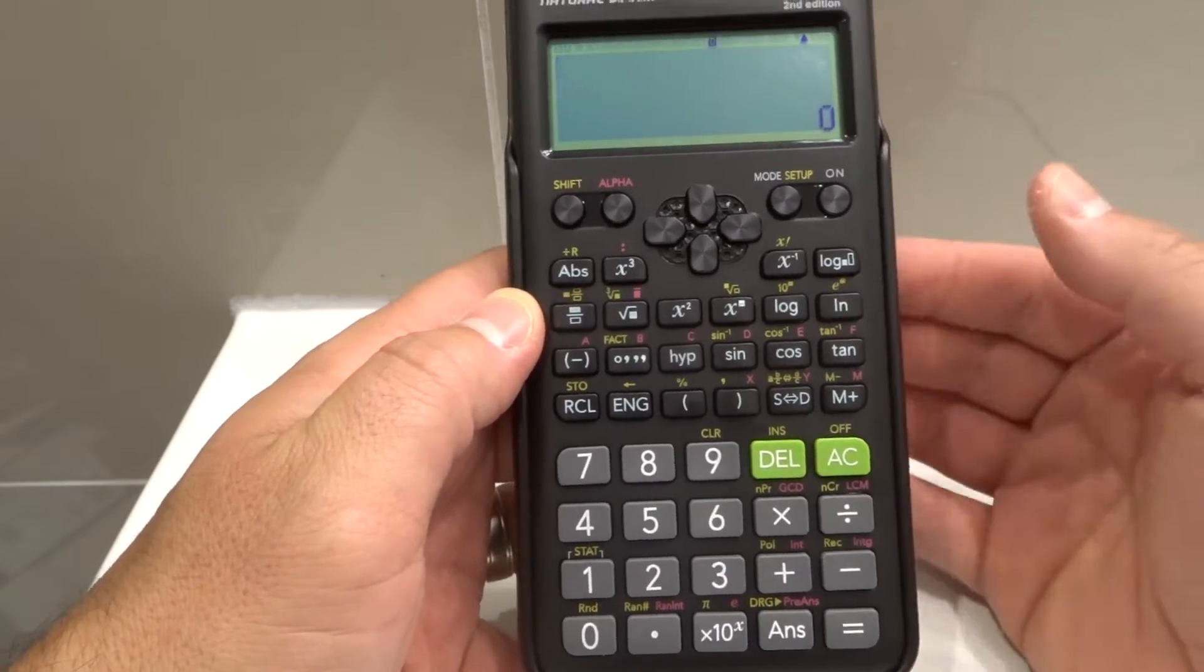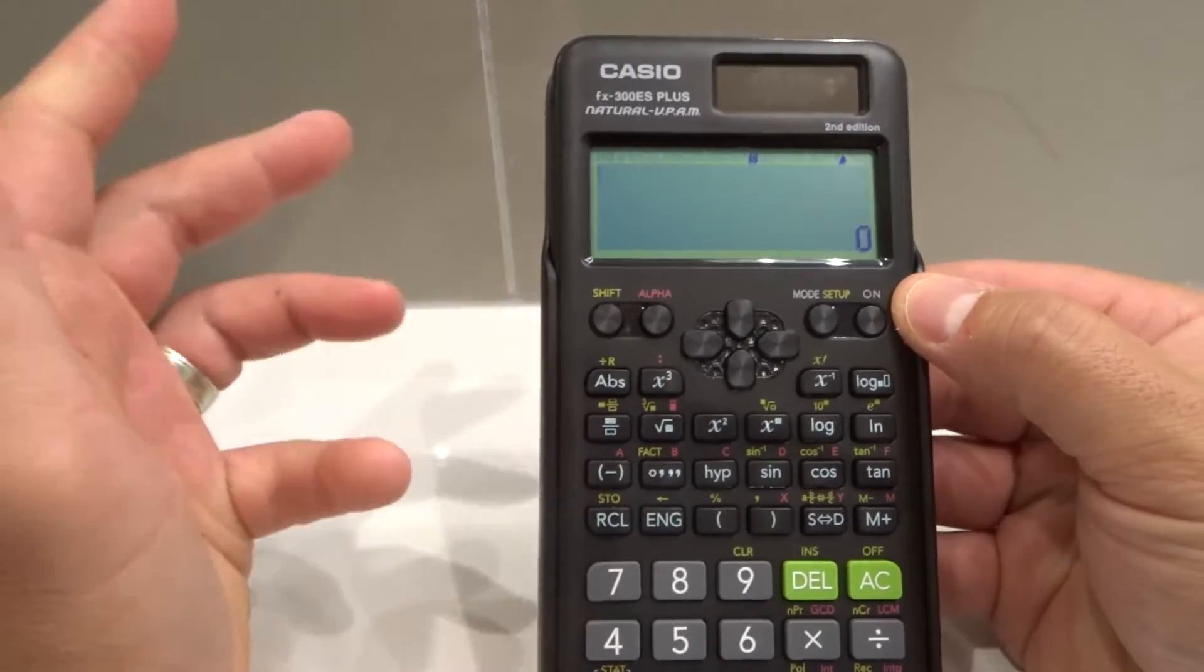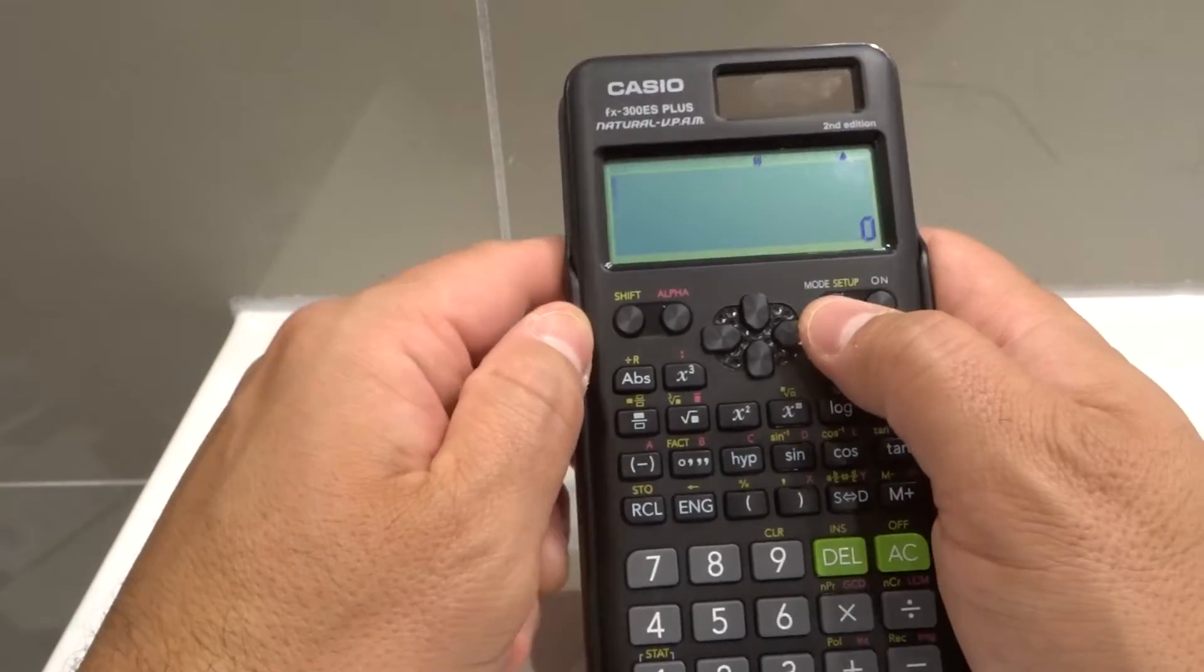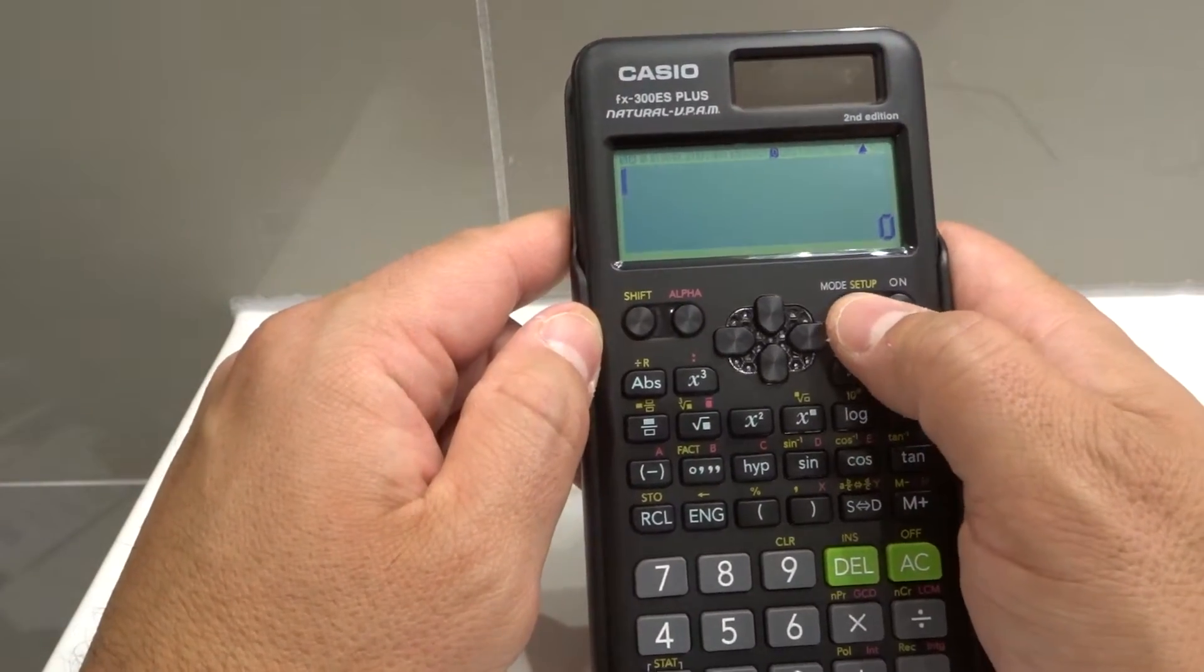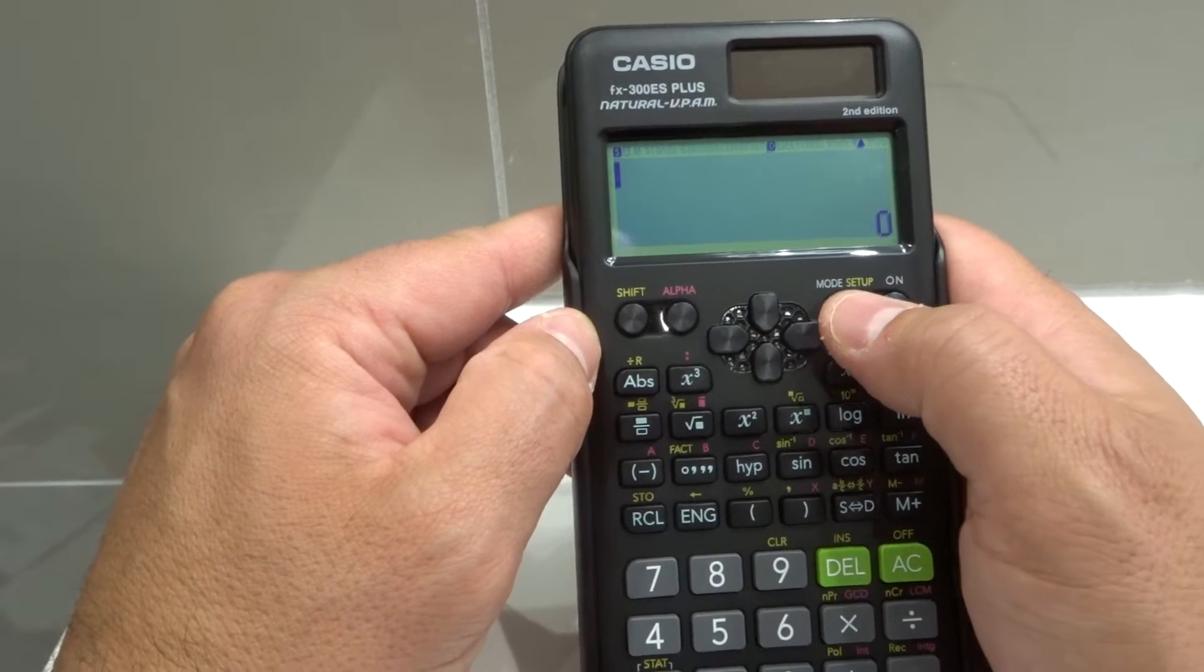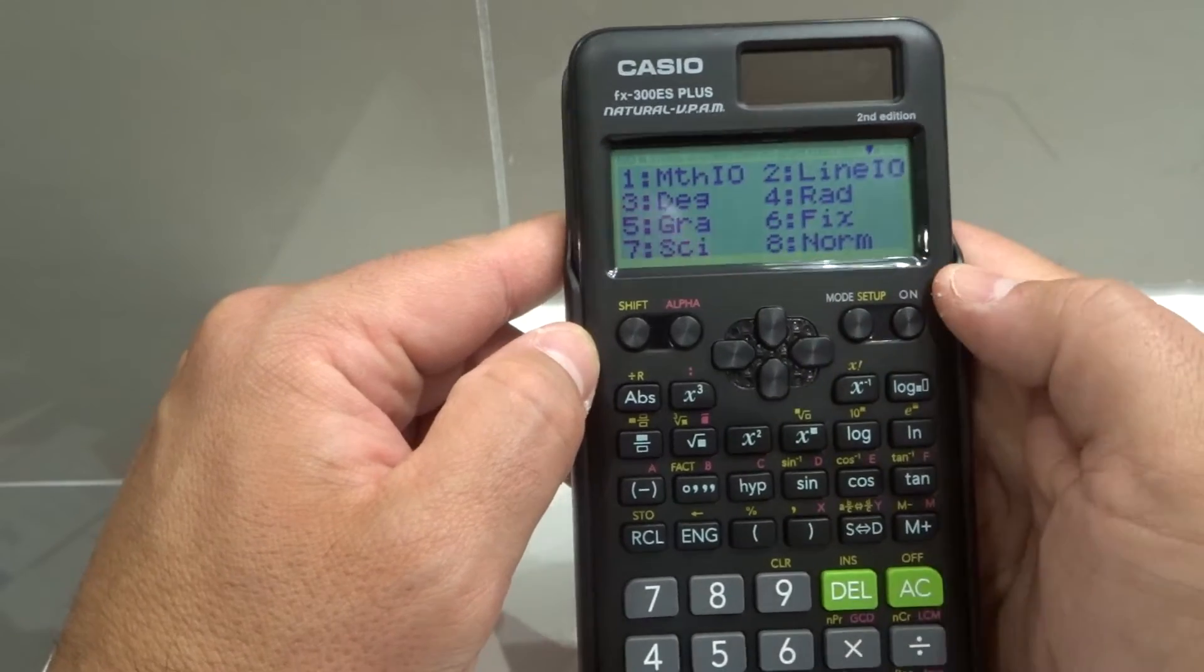So essentially you want to find on your Casio scientific calculator, you want to find the setup option. So if you take a look over here, my setup option is this button in the yellow format. I'm going to push shift because shift is the yellow option and I'm going to push this button to get to the setup option.